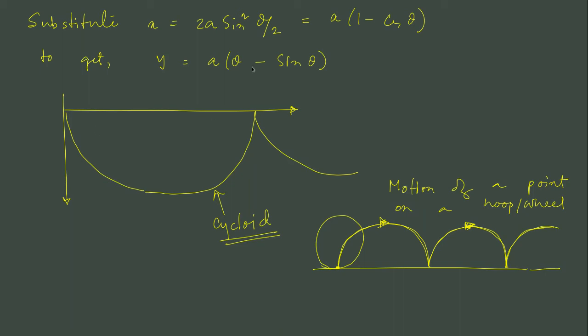We can choose x to be a into 1 minus cos theta and then y automatically becomes a times theta minus sine theta. If you plot x and y using the parametric form, I remember this is y and this is x.